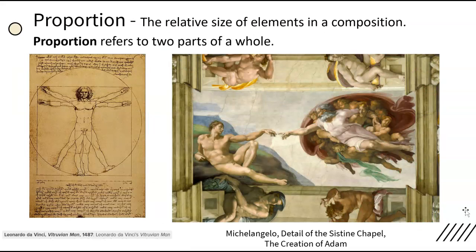Both proportion and scale compare relative size. Proportion refers to two parts of a whole, such as the parts of a body in a figure painting. If you've ever had your caricature drawn or watched Peanuts, you have seen artwork that plays with proportion. The caricature artist gives their subject a huge head and a tiny body, just like Charlie Brown and the rest of the Peanuts gang. Renaissance artists, on the other hand, are known for their use of perfect proportions in the human body.